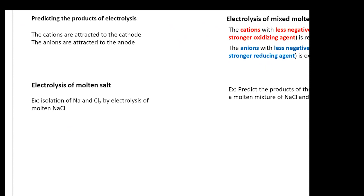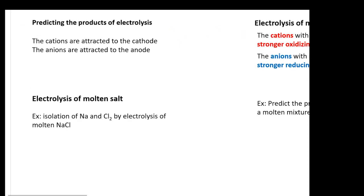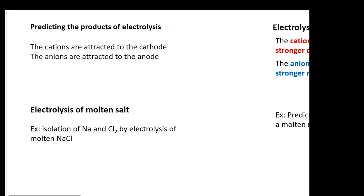One type of question you are going to get asked a lot is to predict the product of electrolysis. The rule of thumb is that the cation is always going to form at the cathode, and the anion is going to form at the anode.